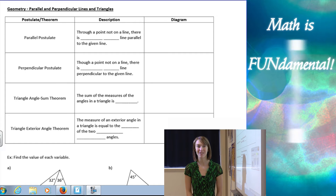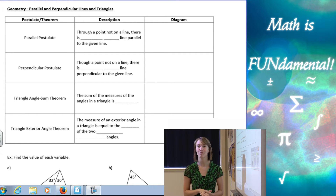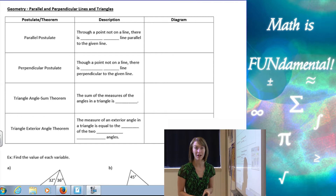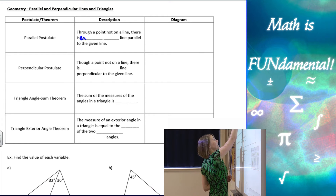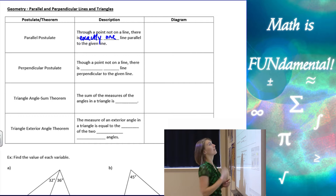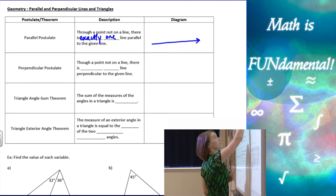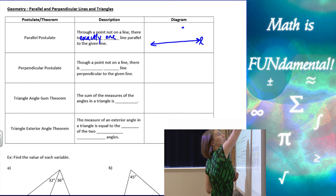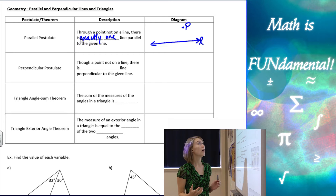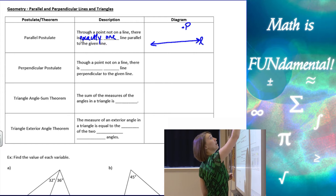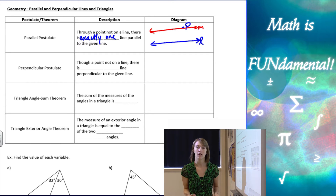Welcome to Math is Fundamental. Today we're going to be talking about parallel and perpendicular lines and a couple of rules about triangles. Starting with the parallel postulate, which says: through a point not on a line, there is exactly one line parallel to the given line. So visually, if I have some line L and some point P not on that line, there's only one possible line I can draw through P parallel to L.